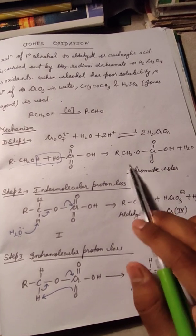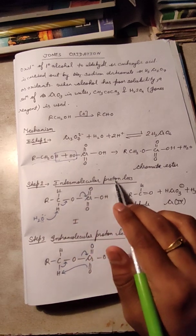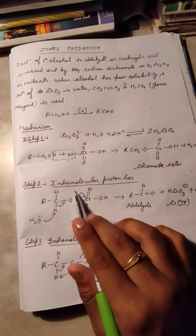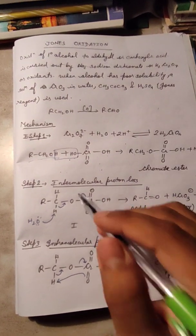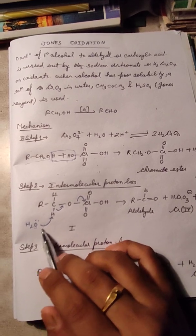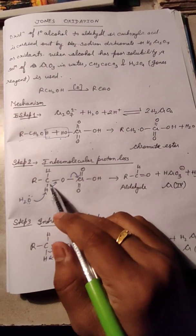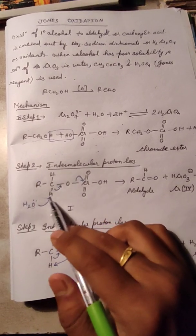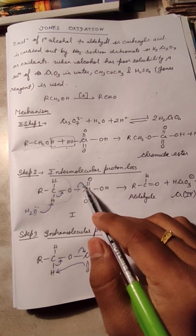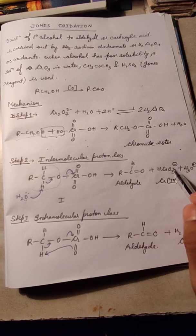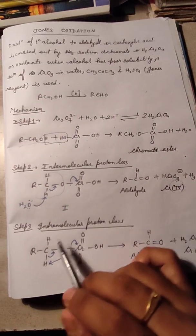The chromate ester undergoes proton loss in two forms: intermolecular and intramolecular proton loss. In intermolecular proton loss, an outside molecule — H₂O — attacks the chromate ester. The H⁺ is released, the bond rearranges, and an aldehyde (CHO) is formed. The chromium atom gains a negative charge, giving HCrO₃⁻, where chromium has oxidation number +4.